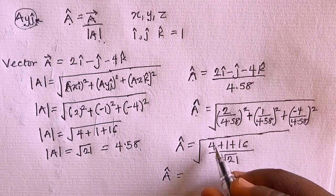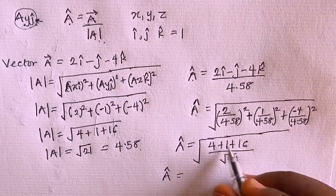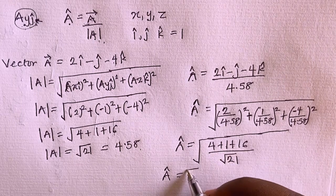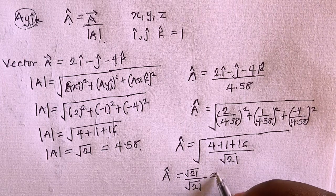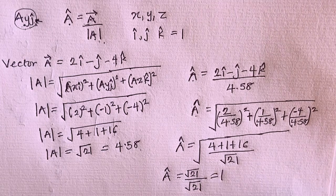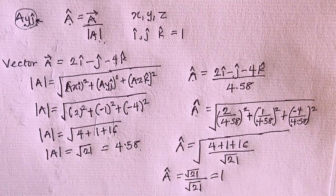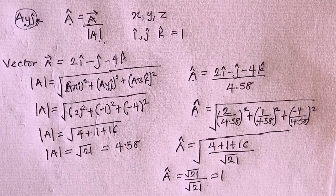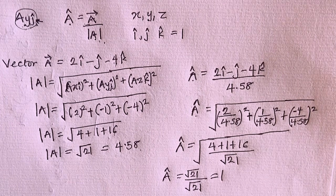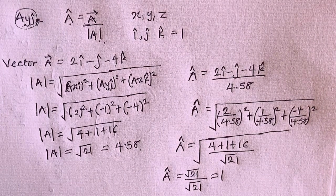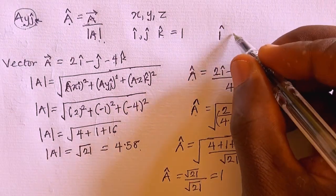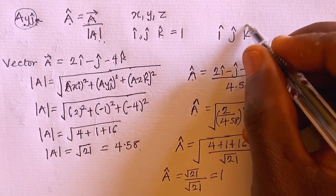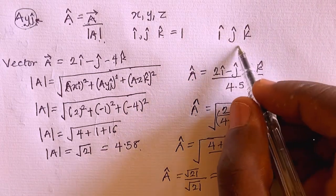Which equals the square root of 21 over the square root of 21, that's 1. So when we are talking about unit vectors, they always have their magnitude equal to 1, and they always point to a particular direction. The unit vectors are i, j, and k as far as three components are concerned.